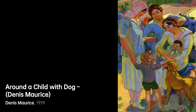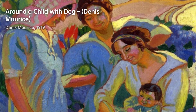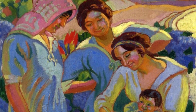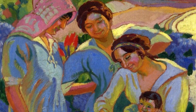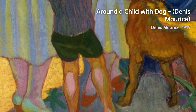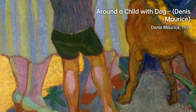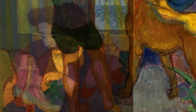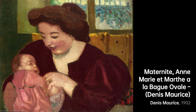Maurice Denis was born on November 25, 1870, in Granville, Manche, France, and had a humble upbringing. His father, who came from a peasant background, worked at the railroad station after serving in the army, while his mother worked as a seamstress. They settled in Saint-Germain-en-Laye, a suburb of Paris.